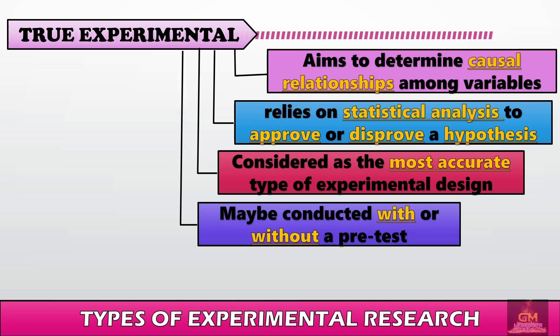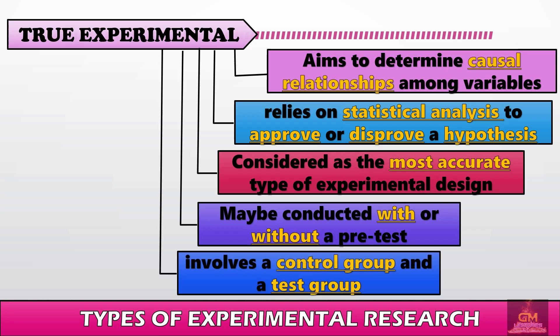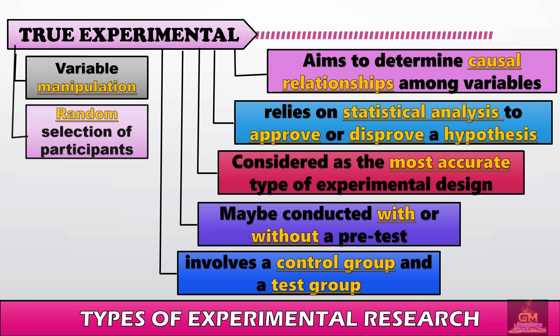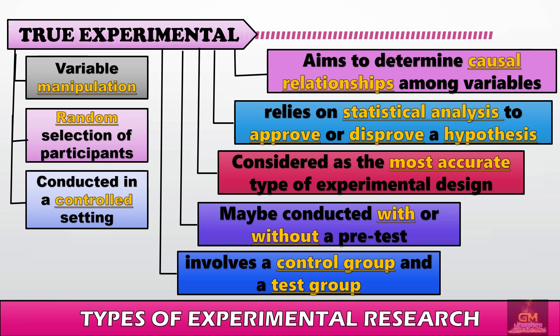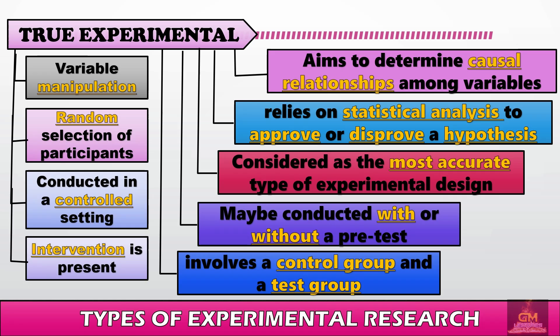True experimental research may be conducted with or without a pretest, and it always involves a control group and a test group. Other characteristics include variable manipulation and random selection of participants. It is always conducted in a controlled setting and intervention is always present.